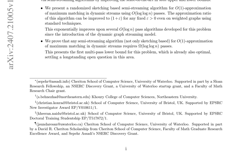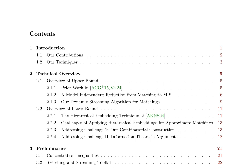The lower bound is based on the hierarchical embedding technique of AKNS24 and uses information-theoretic arguments to address challenges in applying hierarchical embeddings for approximate matchings. The paper also provides a technical overview of the upper and lower bounds, including a discussion of the challenges and techniques used to address them. The authors use concentration inequalities, a sketching and streaming toolkit, and two-party communication complexity to prove their results.